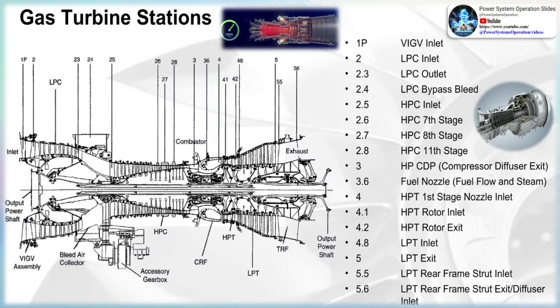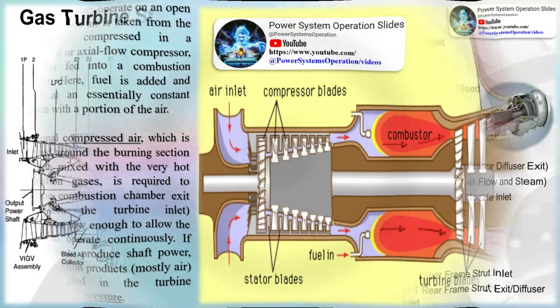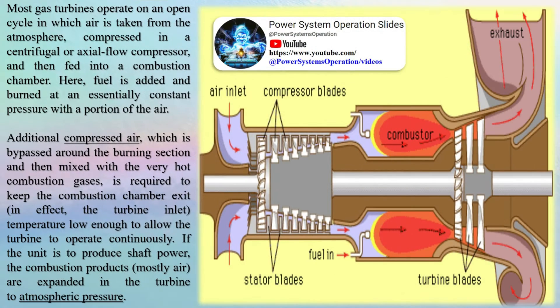Most gas turbines operate on an open cycle in which air is taken from the atmosphere, compressed in a centrifugal or axial flow compressor, and then fed into a combustion chamber. Here, fuel is added and burned at an essentially constant pressure with a portion of the air.